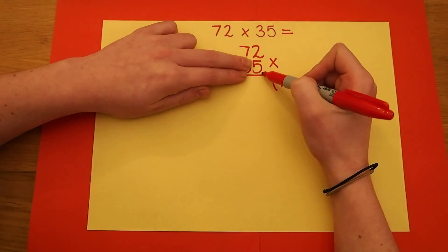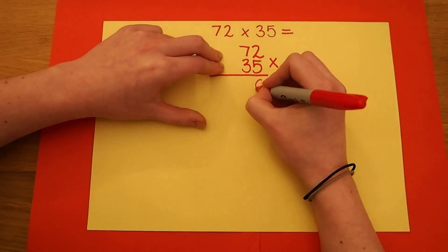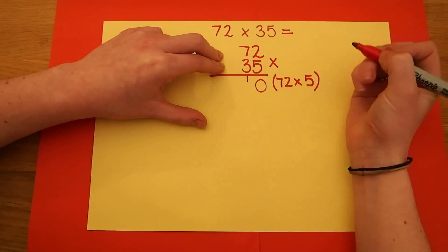To do this we start off in the far right column, in this case the units. 5 times 2 is 10 and I need to carry that one across.